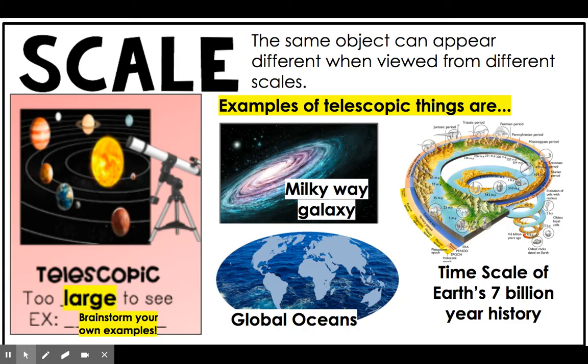Our final scale is telescopic. Things that are telescopic are too large to see without technology or without assistance. Examples of things that are too large to see could be the Milky Way galaxy or our global oceans. We know both of those things are there, but we can't look and see them all at once. We have to really zoom out to get a full picture.